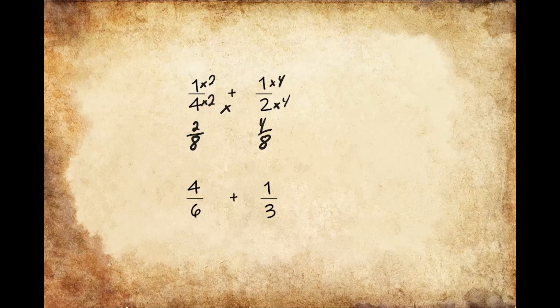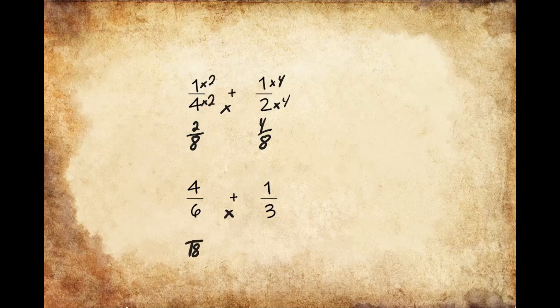So looking at this next question here, we know that our first step is going to be to go ahead and multiply the denominators. And we know that 6 times 3 gives us 18, so we're going to go ahead and write 18 down below, because we know that our new denominator is 18.